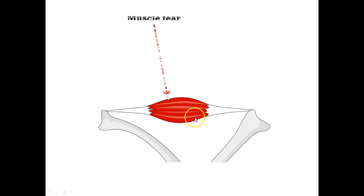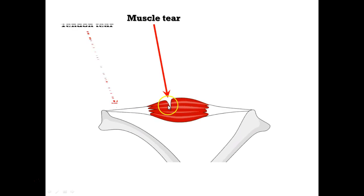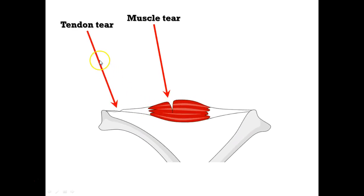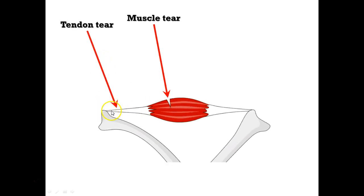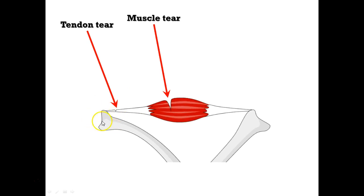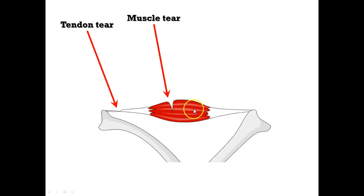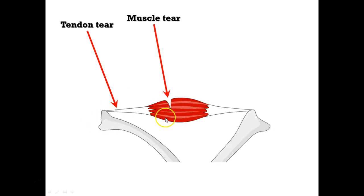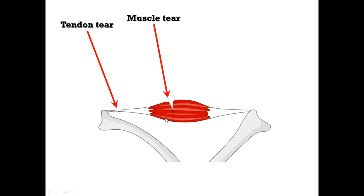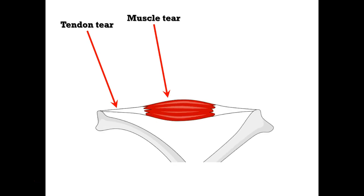Here we have some bones, a muscle tear — which is probably not pleasant — and a tendon tear. Remember: tendons are what connect bones to muscle, but the muscle itself is the part that actually contracts, made out of those sarcomeres of alternating layers of actin and myosin.